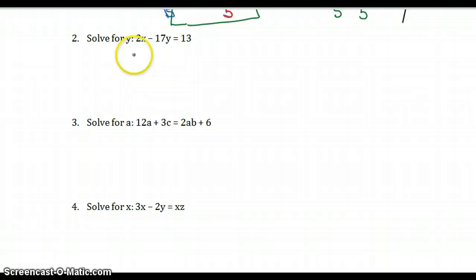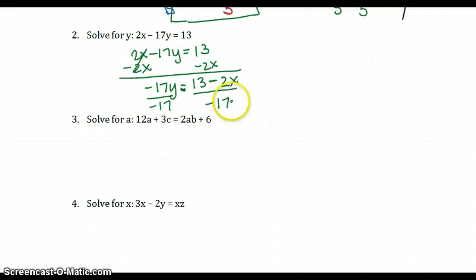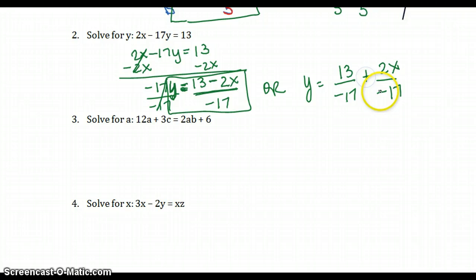We're solving for Y. So I have 2X minus 17Y equals 13. Subtract 2X from both sides. Again here, it's not like terms. So I have negative 17Y equals 13 minus 2X. Divide by negative 17. Either leave it as one fraction, Y equals 13 minus 2X over negative 17, or if you want to write it as two fractions, it would be nice to have 13 over negative 17 plus 2X over 17 since those two negatives turn positive.